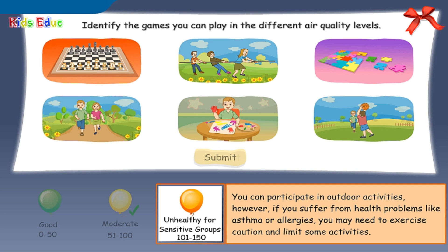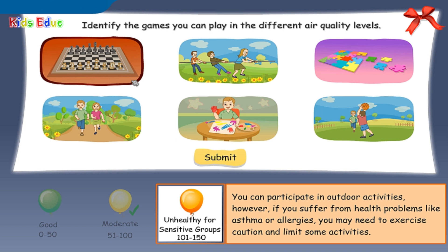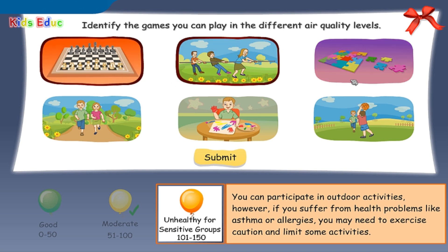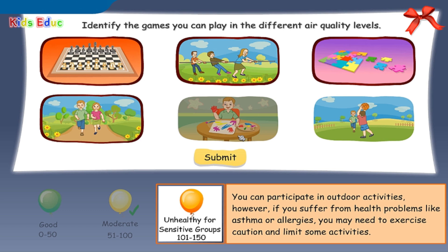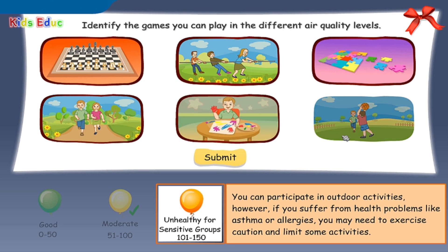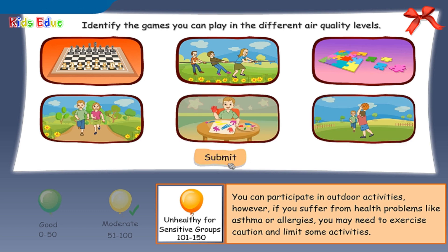Orange — unhealthy for sensitive groups — 101 to 150: indoor activities, outdoor activities, indoor activities, indoor activities. Correct!